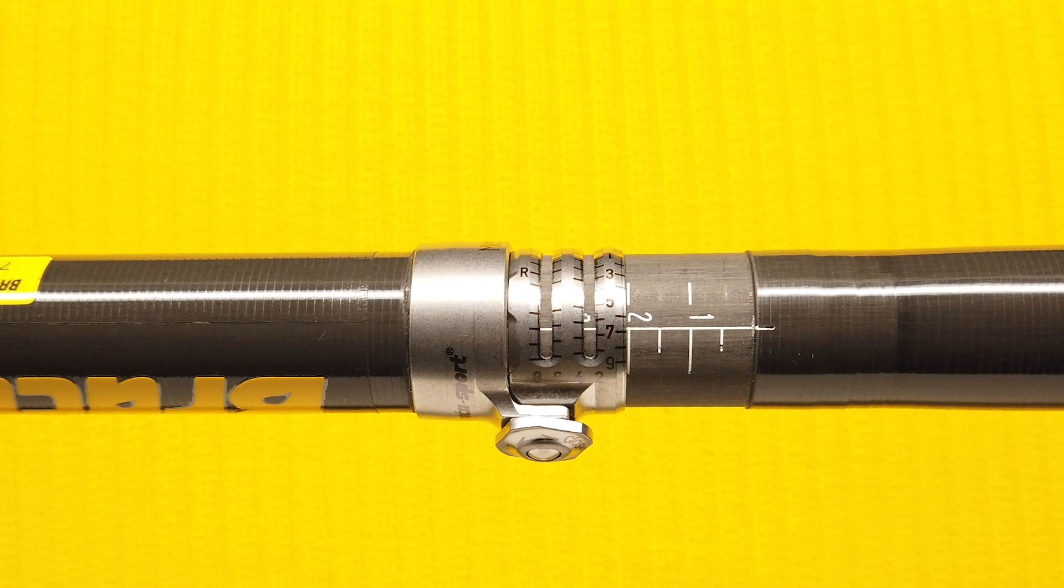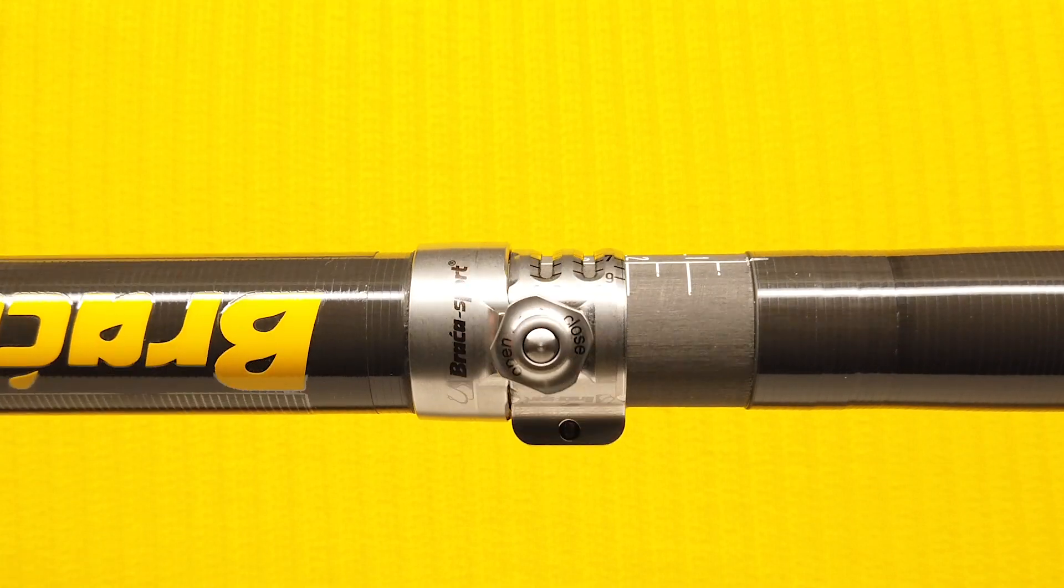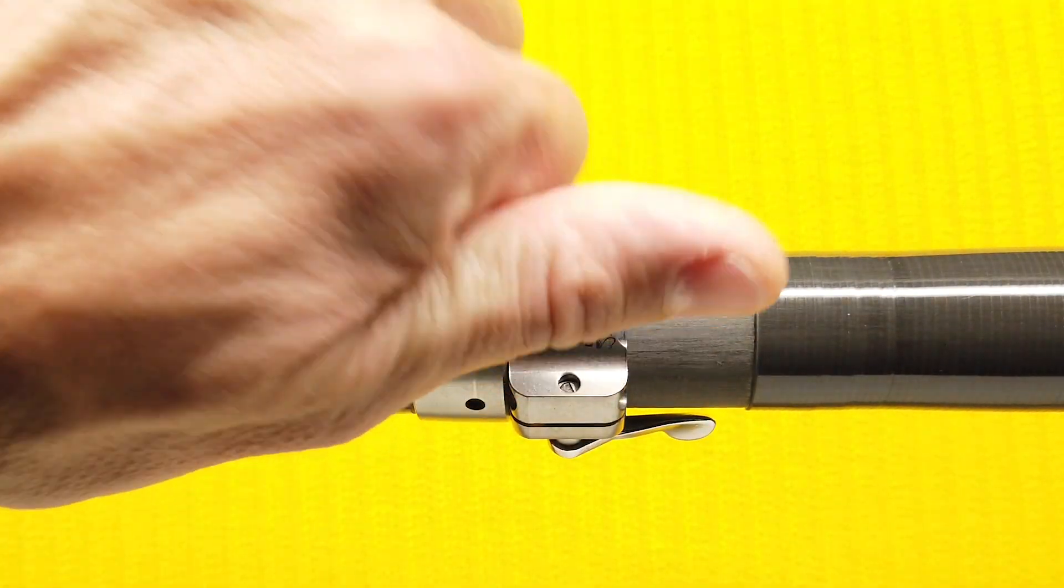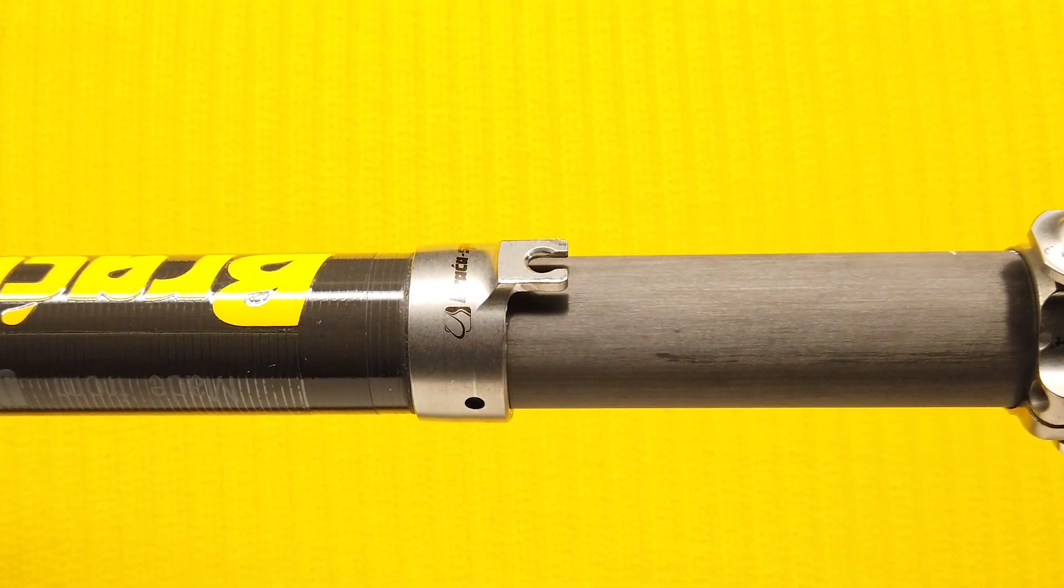If I want to disassemble my paddle, I just turn the quick release knob to open and the two parts come right off.